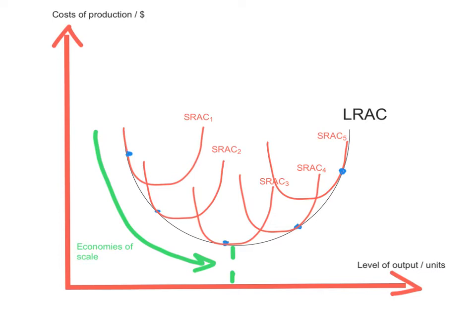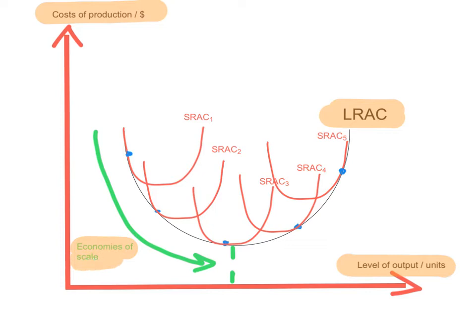Now let's look at the shape of the long run average cost curve. It shows the relationship between the long run cost of production and the level of output — specifically the cost per unit in the long run. There is a range of output where the long run average cost is falling, then it reaches a minimum, and then there is a range of output where the long run average cost is rising. When the long run average cost is falling, we say the firm is experiencing economies of scale — the fall in long run average costs due to increasing the scale of production and increasing all factors of production.